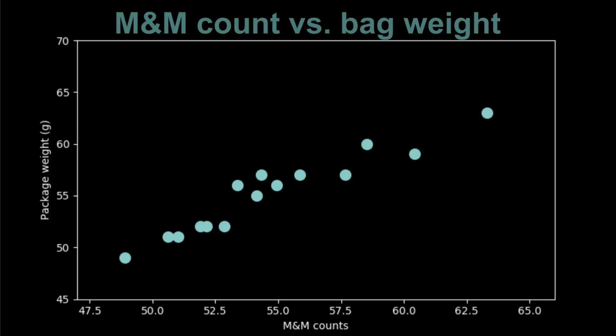If all M&Ms had exactly the same weight as did their paper packaging, these points would lie perfectly on the same straight line. But since there is some variation, that introduces a bit of scatter.